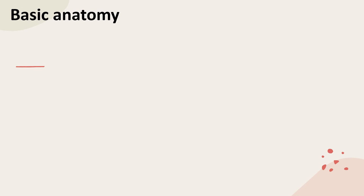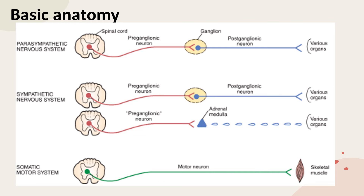There are two neurons in the pathway leading from the spinal cord to organs innervated by parasympathetic nerves. The synapse between these two neurons occurs at a structure called the ganglion, which is a mass of nerve cell bodies. Neurons going from the spinal cord to the parasympathetic ganglia are called preganglionic neurons, whereas neurons going from the ganglia to effector organs are called postganglionic neurons. This same arrangement applies to the sympathetic nervous system.